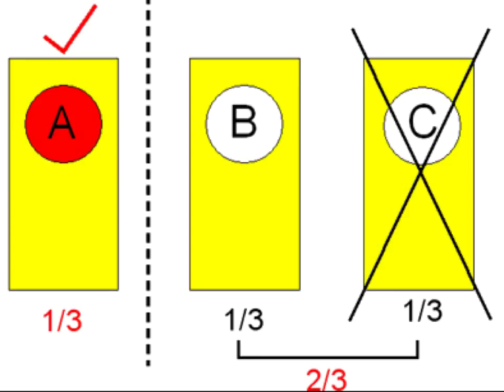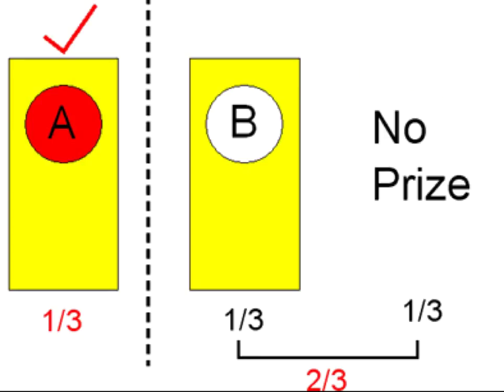Say that now the host is revealing door C, which has no prize behind it. You now have the choice between staying with door A, which you initially chose, or switching to door B.